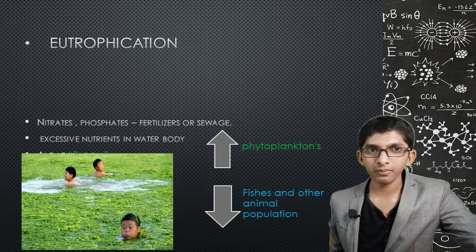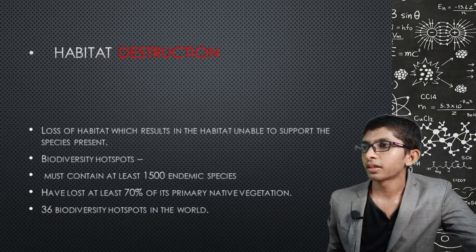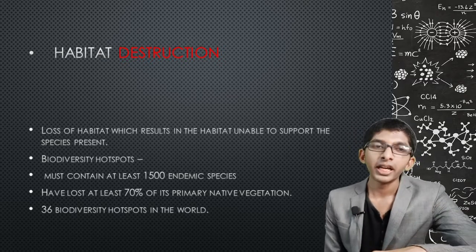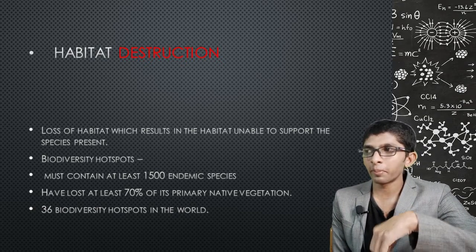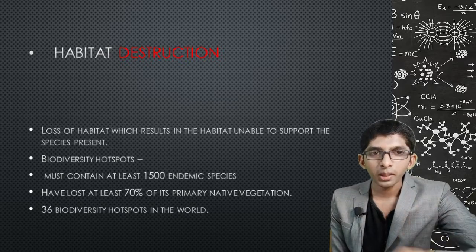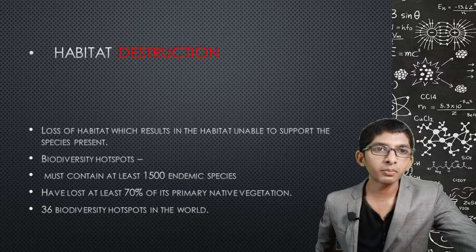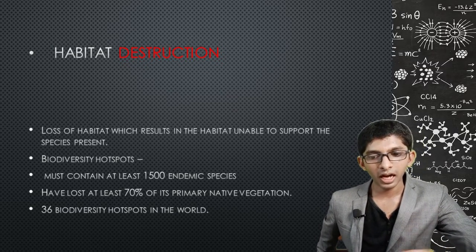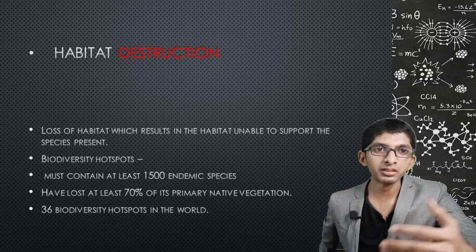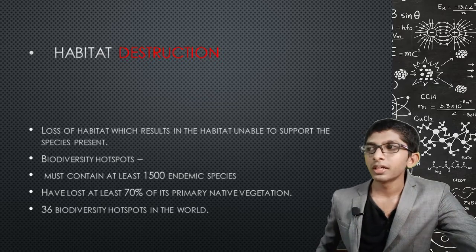Eutrophication ultimately destroys aquatic ecosystems. The last major aspect of environmental degradation is habitat destruction. Habitat destruction refers to the destruction of natural environmental areas such as forests. When forests are cut down, the habitat of birds, animals, and insects is destroyed.